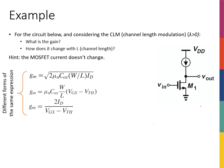Let's solve another example. This time I have a common source amplifier, but instead of having a resistor here, I actually have a current source — a DC current source, let's call that Id. The question asks that we should consider channel length modulation, so lambda is greater than zero, meaning I'll have an r-naught. Also, the MOSFET current doesn't change if I change the channel length, because the current is set by this ideal current source — ideal current sources always have the same current no matter what.